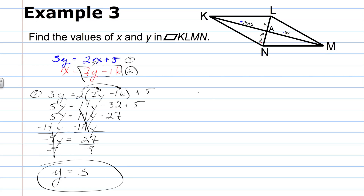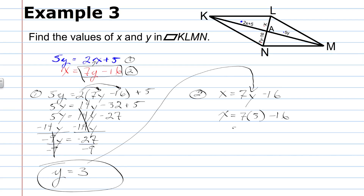Taking Y equals 3 and substituting into equation 2, which is already solved for X: X equals 7 times 3 minus 16, which is 21 minus 16, which equals 5. So the two solutions are Y equals 3 and X equals 5. We could substitute these back in to find actual lengths, but that's not what was asked.